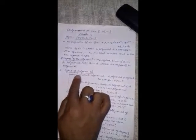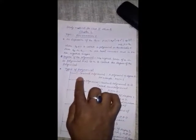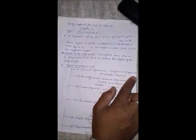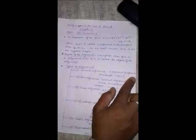Third point is type of polynomial. First, constant polynomial. A polynomial of degree 0 is called constant polynomial. For example, px is equal to 5.